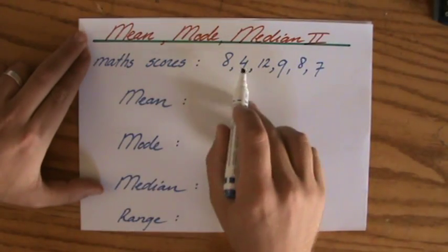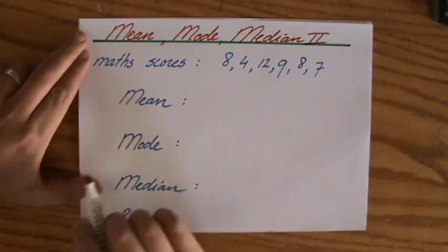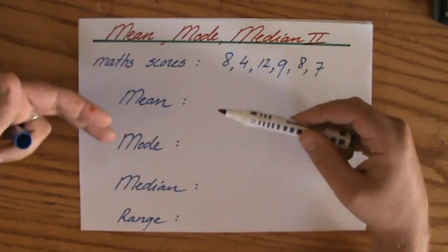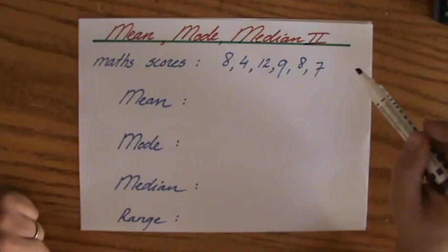So let's say I have some math scores: an 8, a 4, 12, 9, 8, and a 7. And I have to calculate the mean, the mode, the median, and the range.